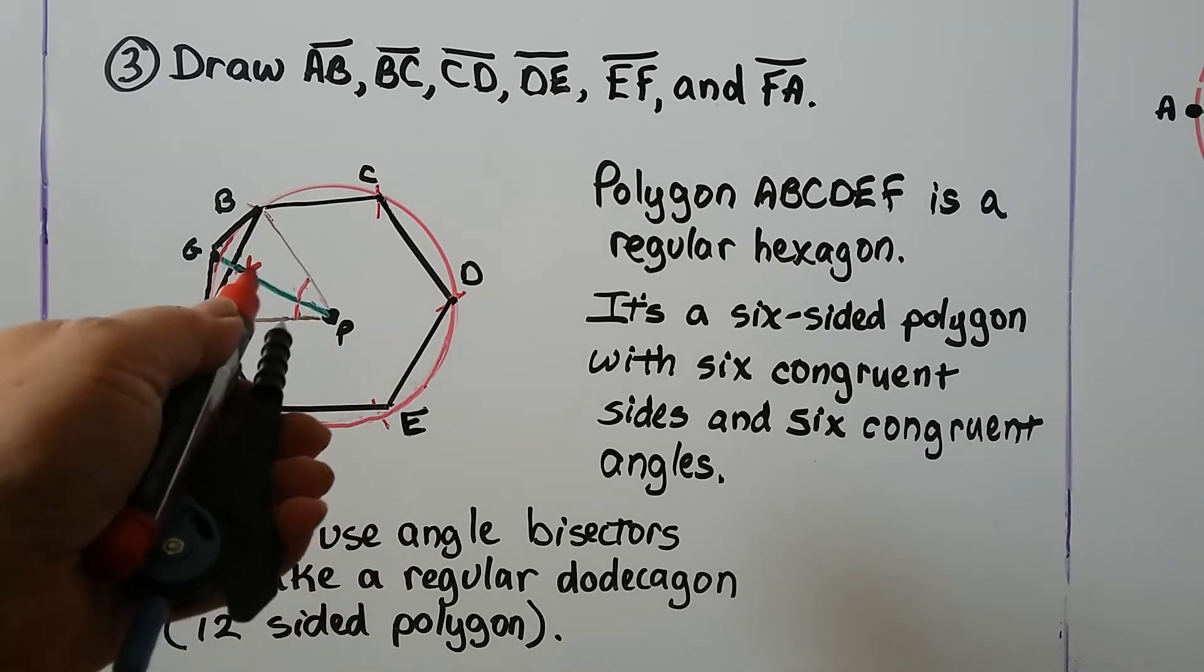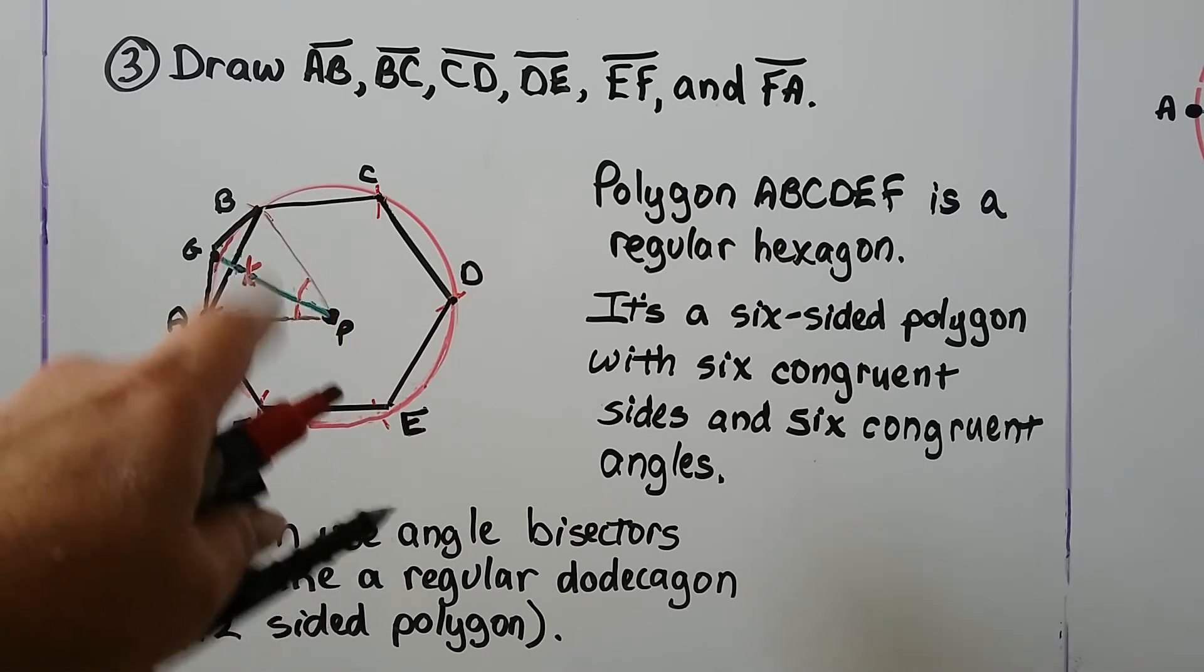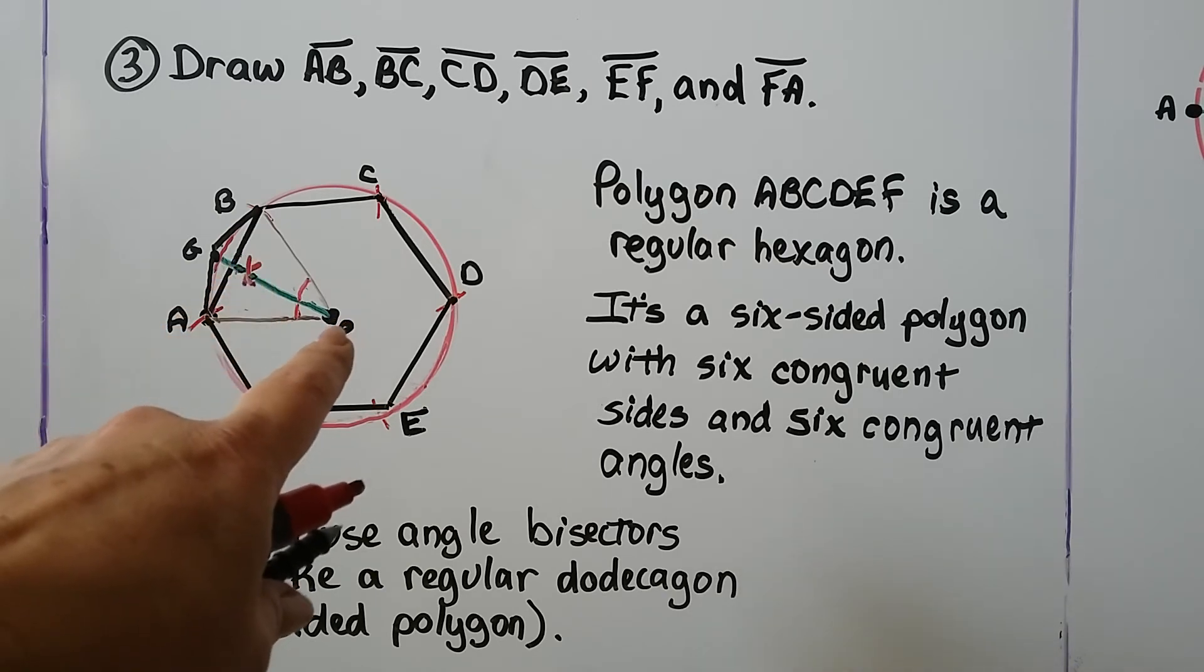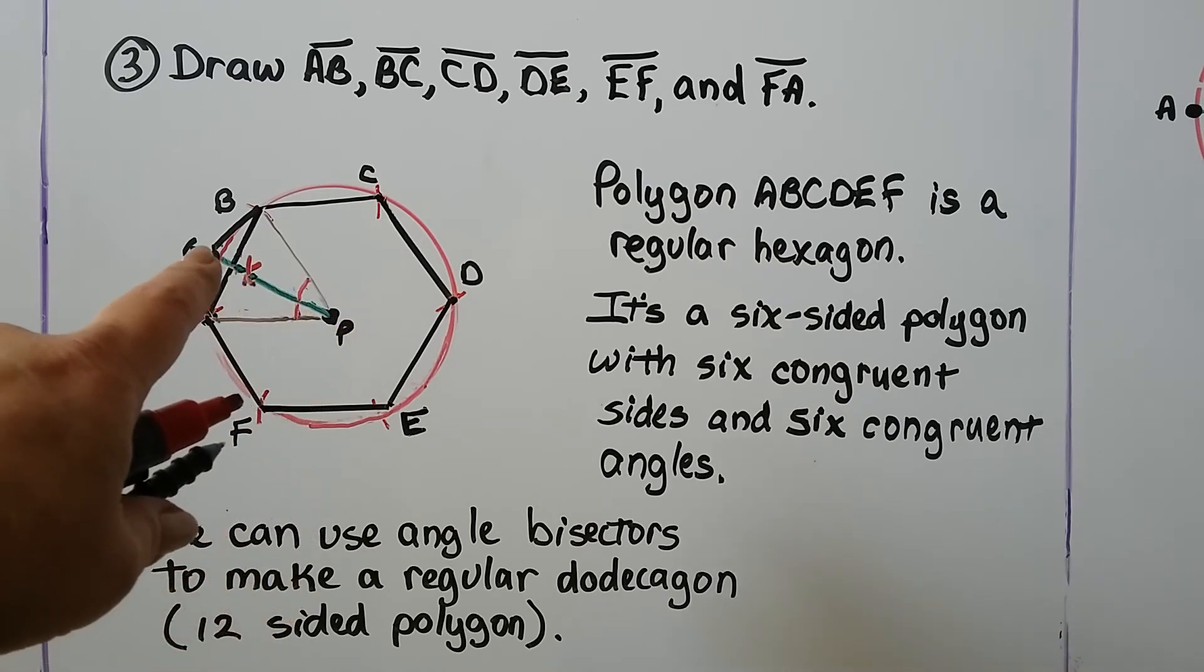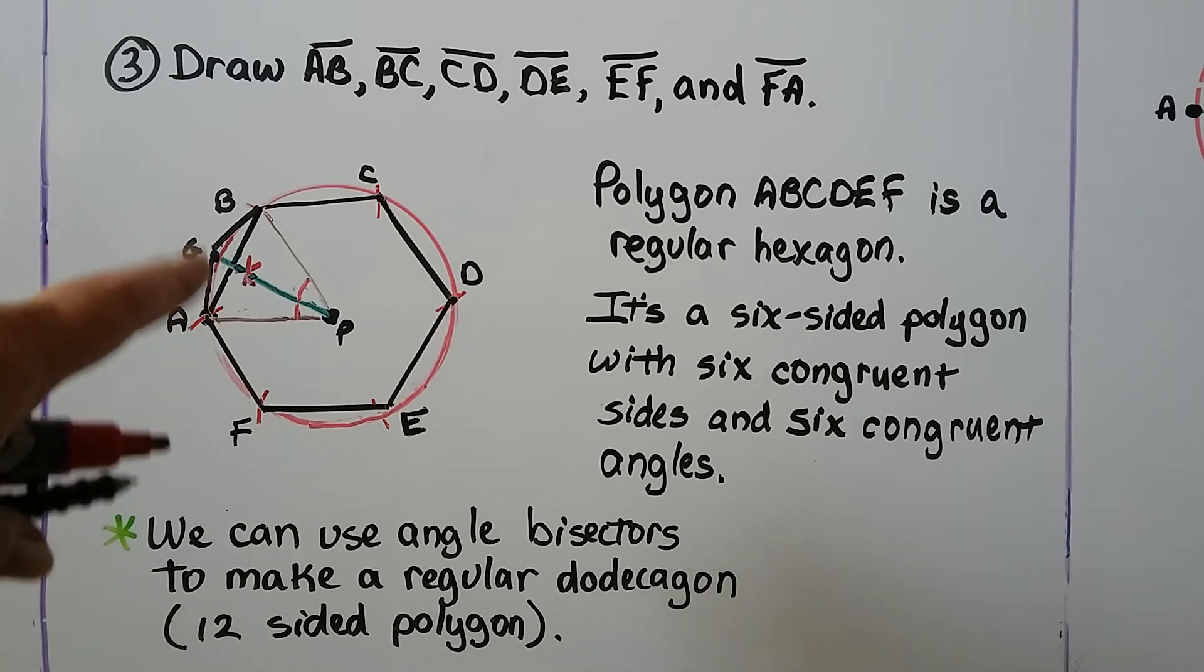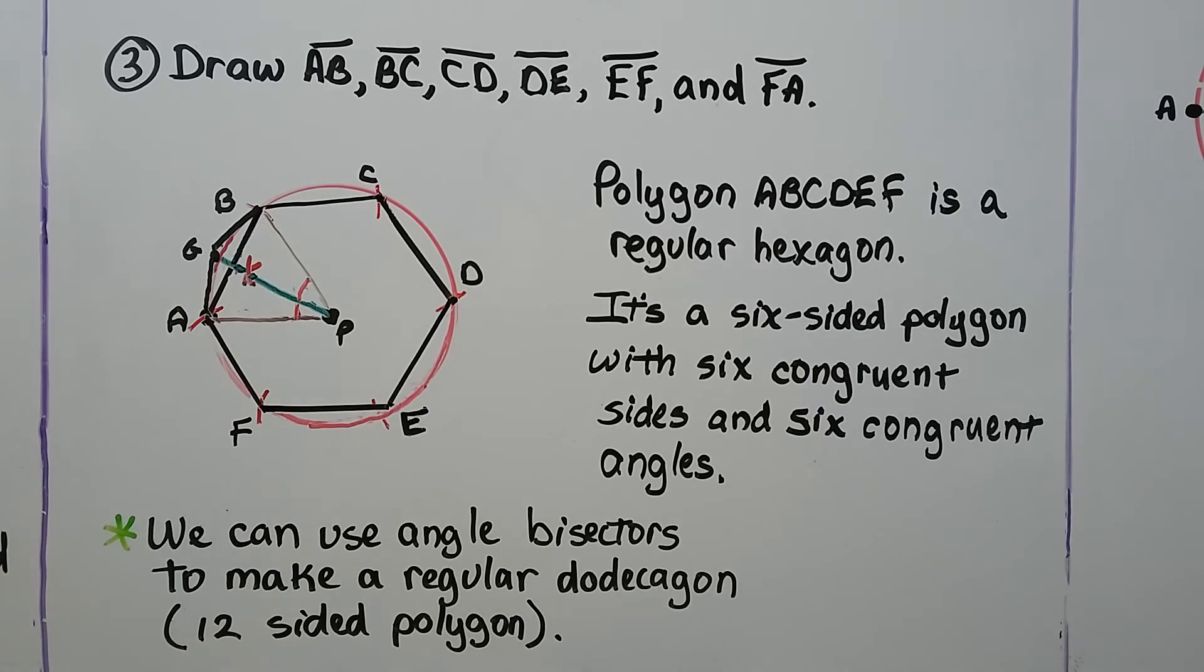We make a little arc from P. Where this arc intersects AP, we make a little arc here, and where it intersects PB, we put our point here and make a little arc, so we make our little X. We draw our segment through P and create point G. That's where we can make AG and GB and do it going all the way around. We'll make a regular dodecagon, a 12-sided polygon.